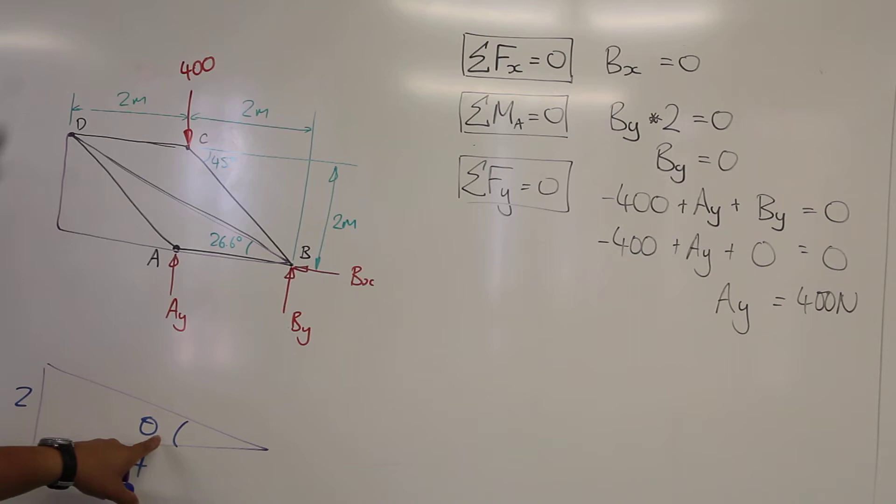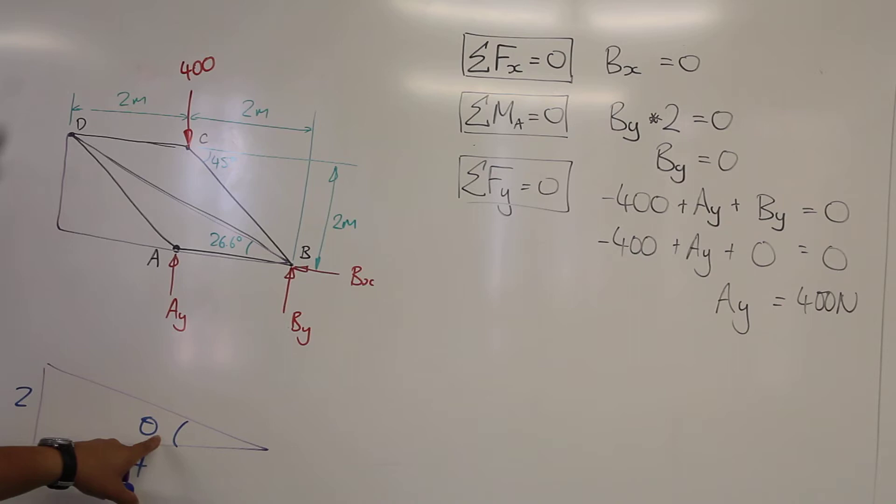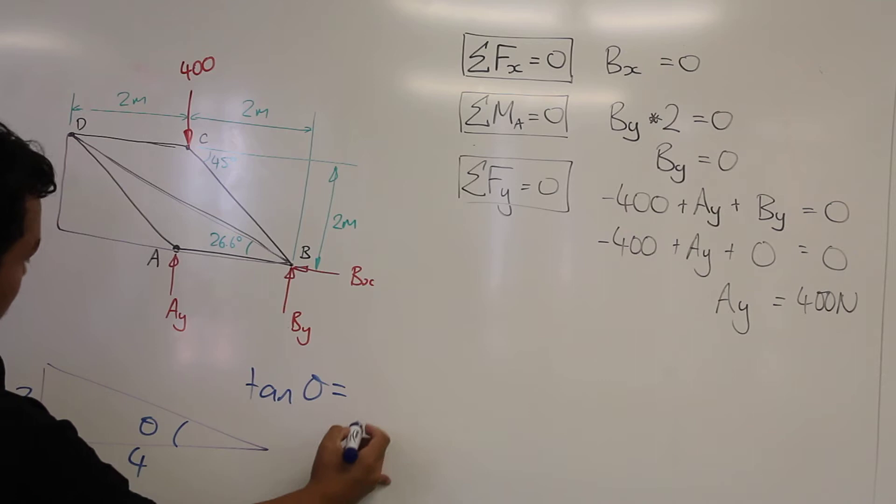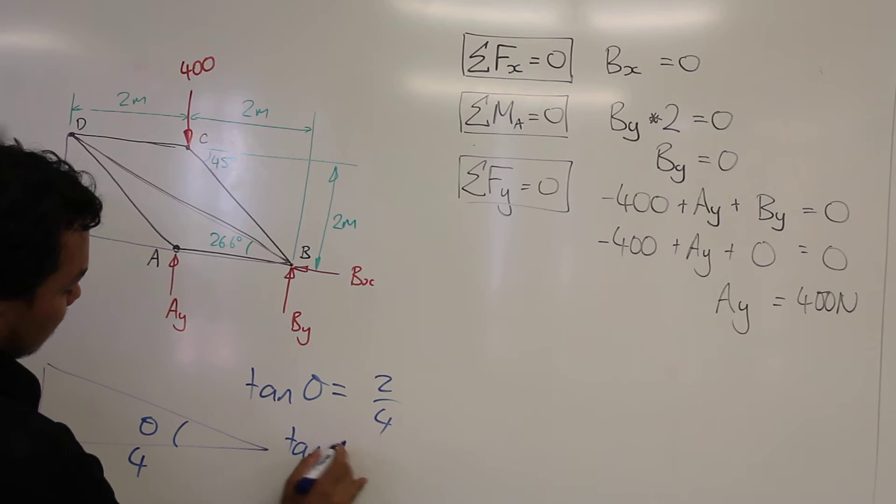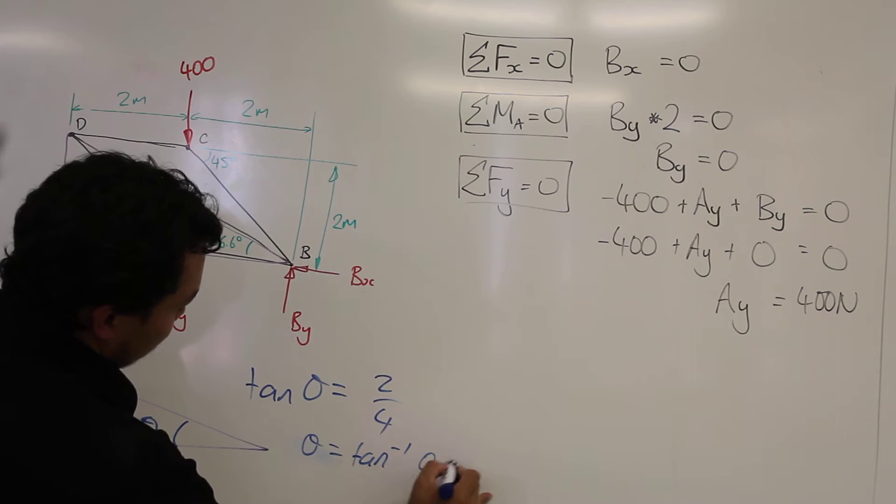We can calculate the angle theta by finding tan theta equal to opposite, or 2, divided by 4. And we get theta equal to tan inverse of 0.5. And then from that, we get 26.6 degrees.